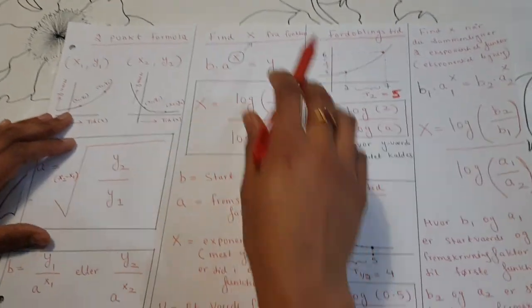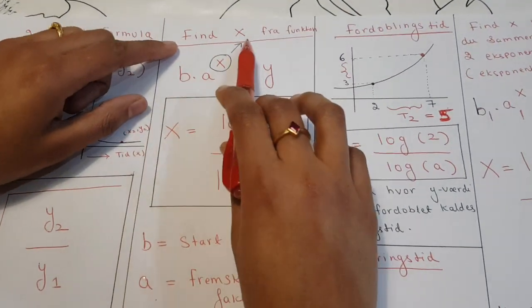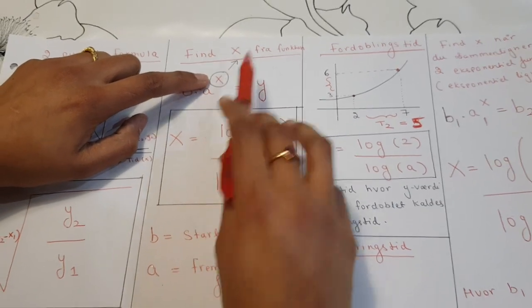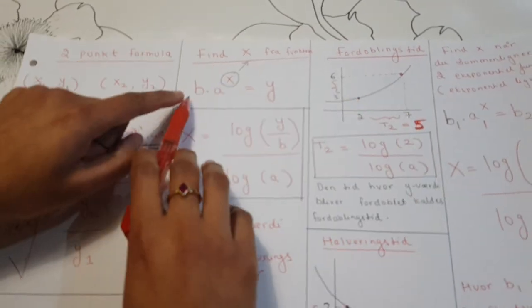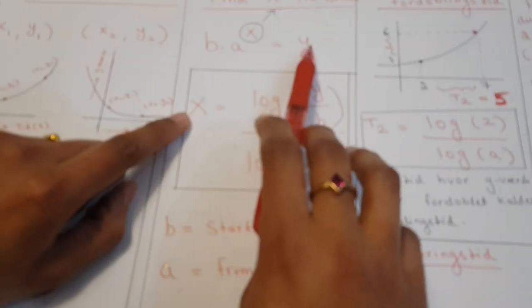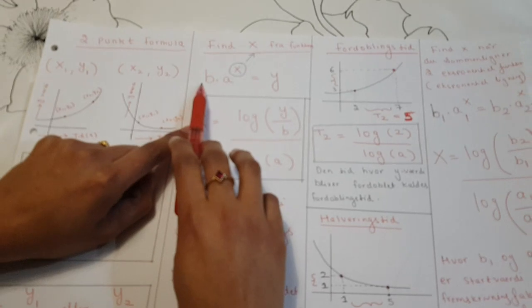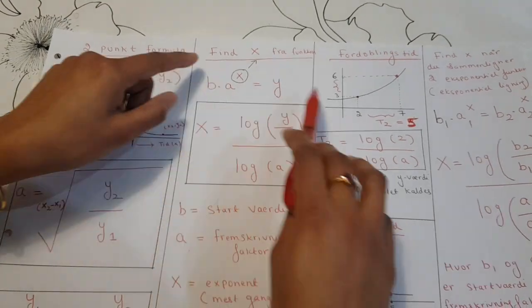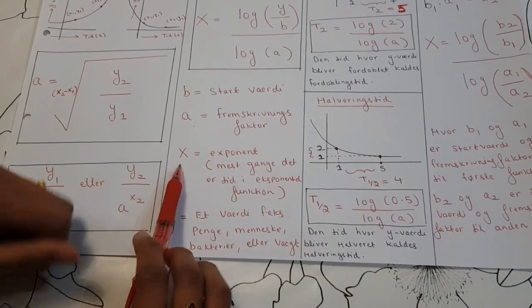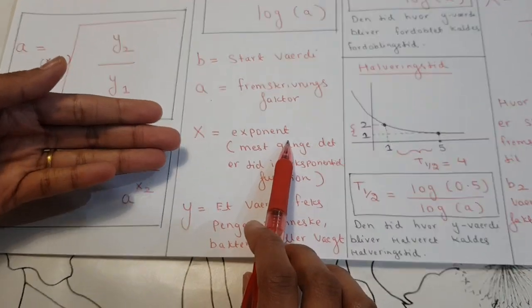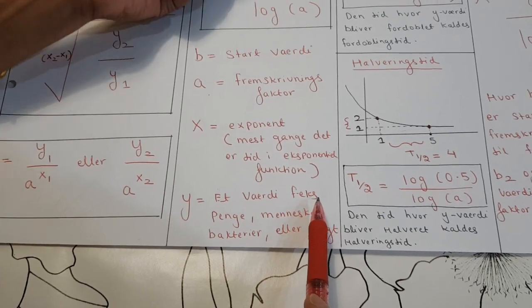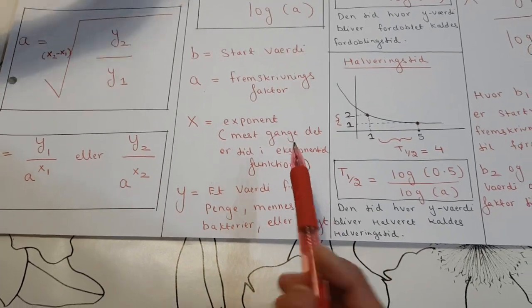So we have formula number two. For the exponential function, a times x, the exponent is the exponential function. So you have f(x), y equals b over a. So the start value is the a from the growth factor, or x is the exponent or you have minus in the exponent.